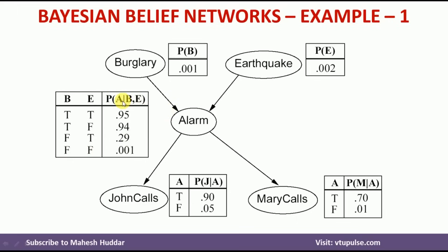We also need to calculate the probability of no alarm given B and E. The probability that there is no alarm given burglary and earthquake is equal to 1 minus 0.95, which is 0.05. Whenever there is no alarm given burglary but no earthquake, that is equal to 1 minus 0.94, which is 0.06. Similarly, we calculate the remaining complementary probabilities.